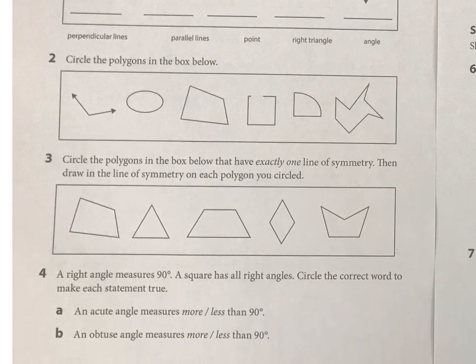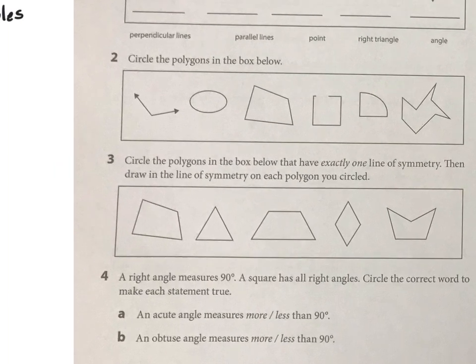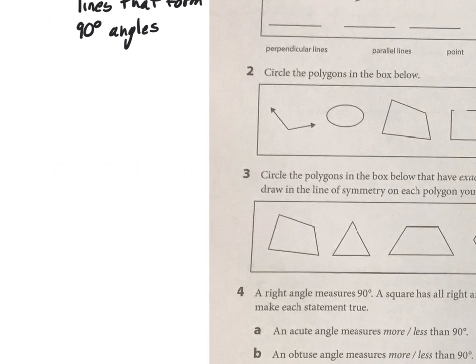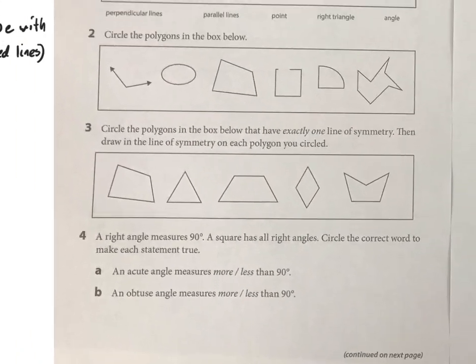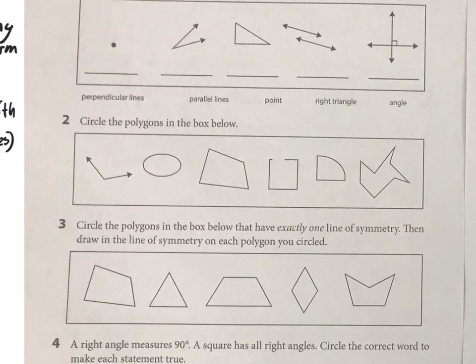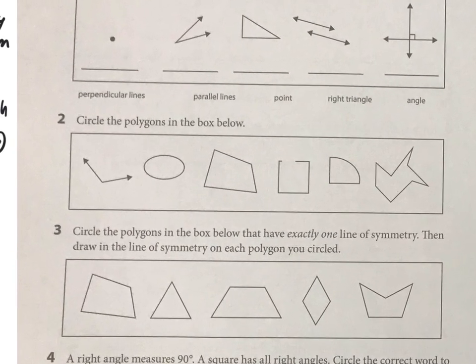Now we're talking about polygons, so let's review that term real quick. A polygon is a closed two-dimensional or 2D shape with three or more sides, and there are no curved lines. If you look at these five shapes in number two, it's pretty simple — there are two polygons there.